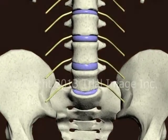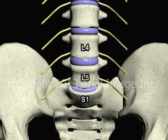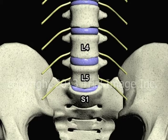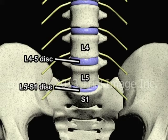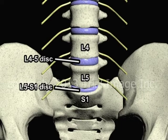Taking a look first at the anatomy, we see the fourth and fifth lumbar vertebra, or L4 and L5 as they're known for short, and the first sacral vertebra, or S1, and then the L4-5 disc sitting between the fourth and fifth lumbar vertebra, and the L5-S1 disc sitting between the fifth lumbar and first sacral vertebra. The intervertebral discs are made of a firm but flexible material that act as shock absorbers between the spinal vertebra.